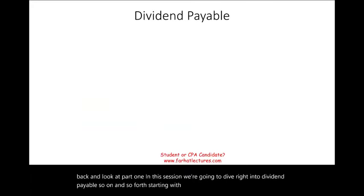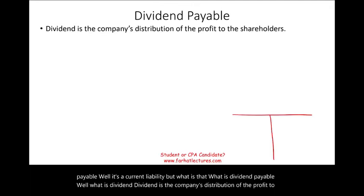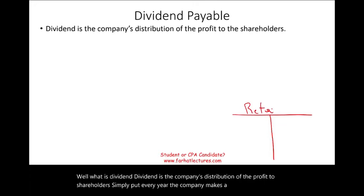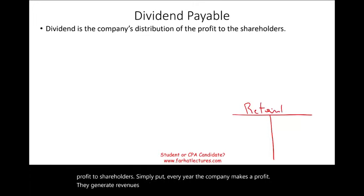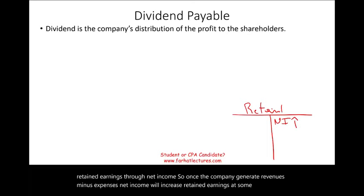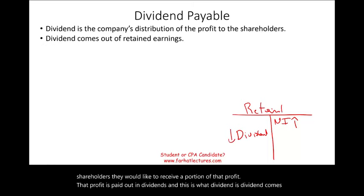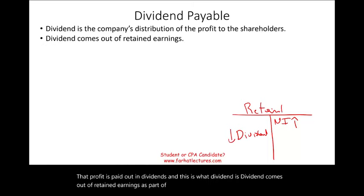Starting with dividend payable. A dividend is the company's distribution of profit to shareholders. Every year the company generates revenues and expenses; revenues and expenses close to retained earnings through net income. Once net income increases retained earnings, shareholders may wish to receive a portion of that profit, paid out as a dividend. Dividends come out of retained earnings as a distribution to shareholders.